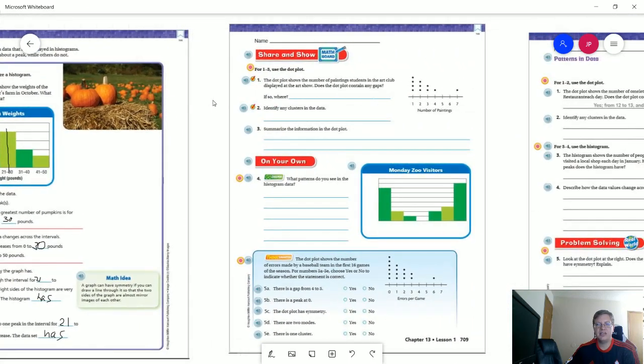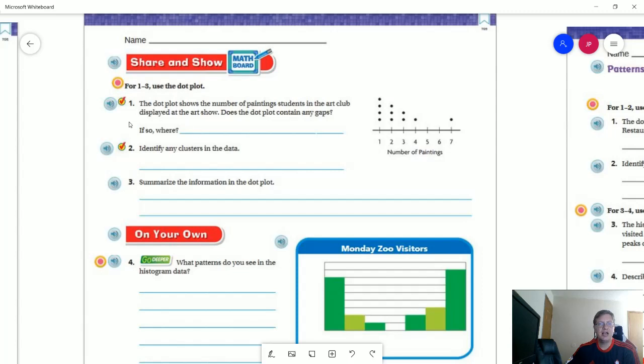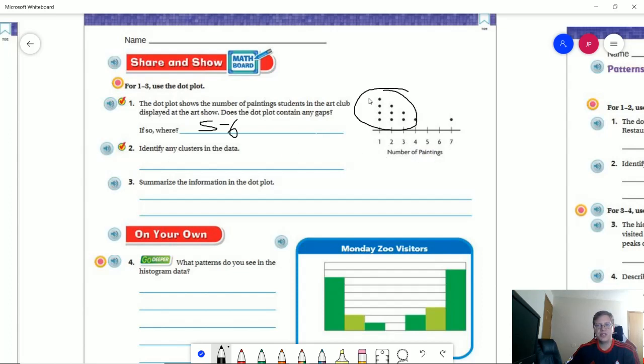All right, let's take a look at the share and show problems. So our dot plot, we are going to see if there are any gaps. We do have one that would be between five and six. And that is going to relate to the number of paintings. Identify clusters. This would be our cluster. So one to four. To summarize the data, all we need to do is just say that there were students that painted one, two, three, four, and seven paintings. And then you can talk about that no students painted five or six. And then any other additional information that you would like to include.